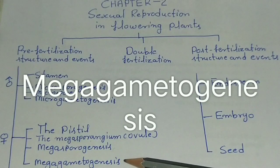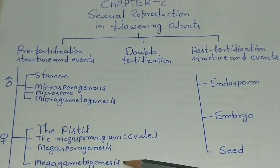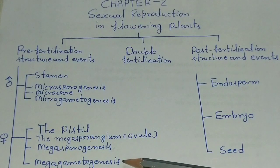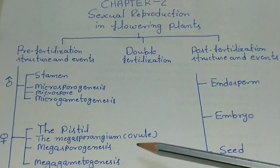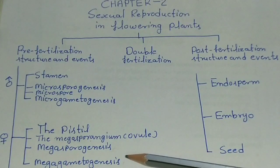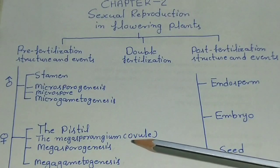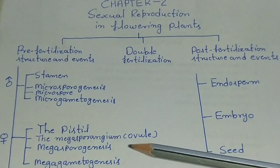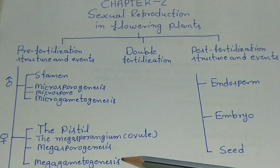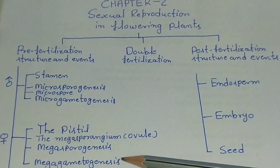Today we will discuss about mega gametogenesis. What is mega gametogenesis? Mega gametogenesis is a process during which an embryo sac is formed from a mega spore. That process is known as mega gametogenesis. See the developmental stages of mega gametogenesis in your NCERT book, figure 2.8.